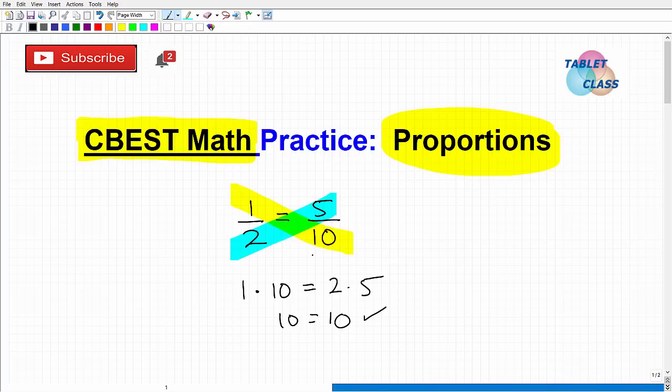This is the main way that we want to solve proportion problems, by using the cross product. But again, you might see a problem something like this: 1 over 2 is equal to 3 over 7. You might see a problem that says is this a proportion, yes or no, and explain why.